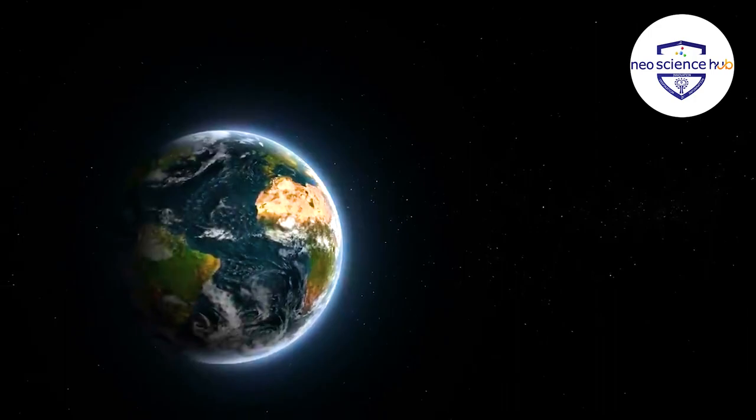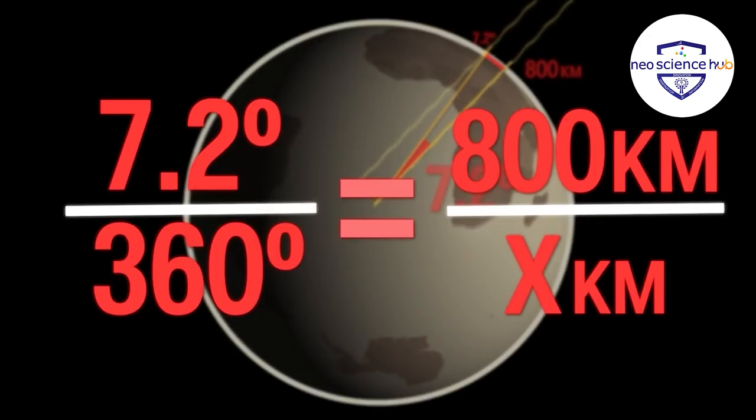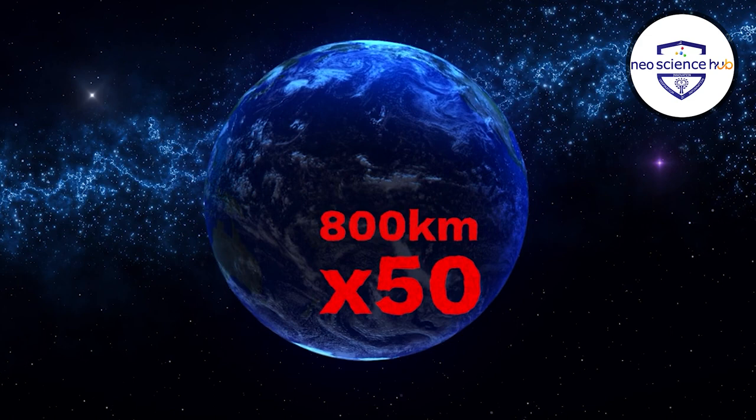The two cities were 800 kilometers apart. He now calculated 800 kilometers is about 1/50th of the whole. So, the whole would be 800 multiplied by 50, which is 40,000 kilometers.